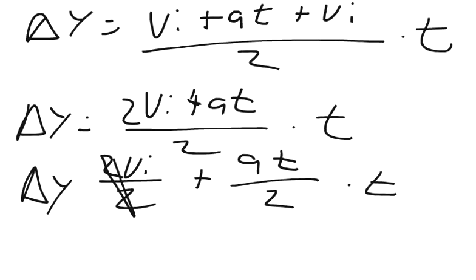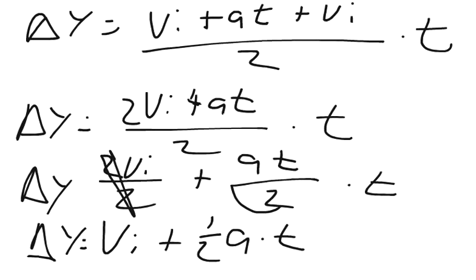And we can break apart our addition components to be our change in y equals two times the initial velocity over two plus at over two times t. And so these two's can cancel each other out, and then this can be brought out to a one-half. So you have change in velocity equals the initial velocity plus one-half acceleration times time times time. So t squared.